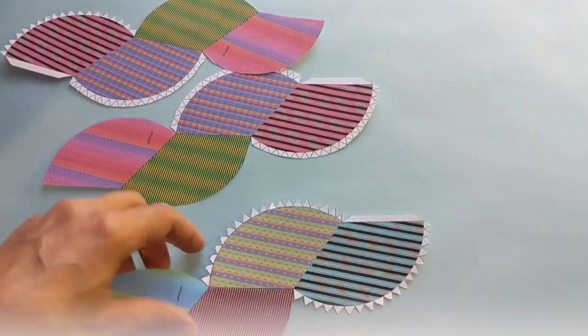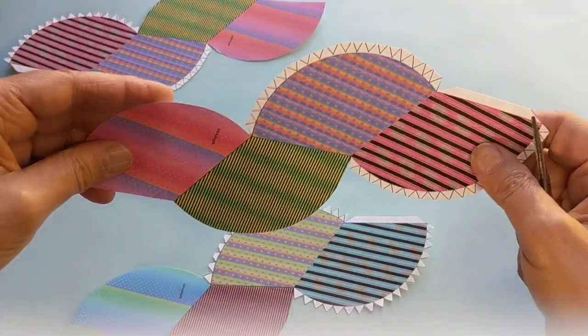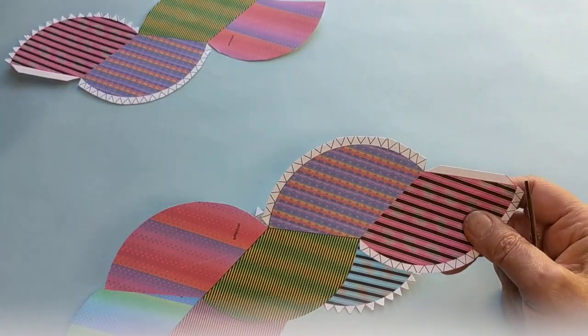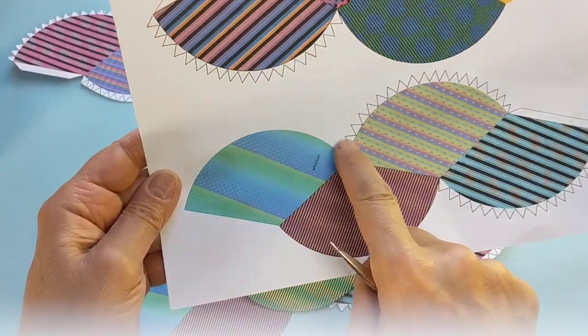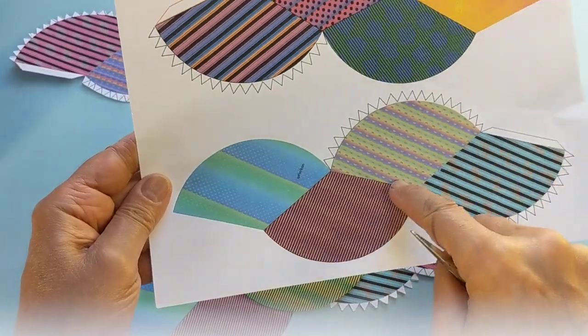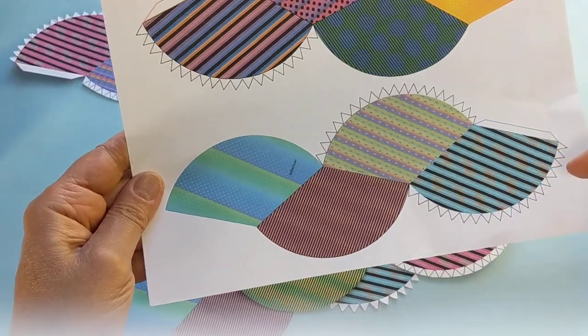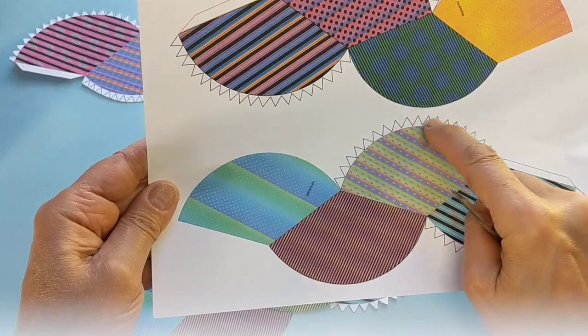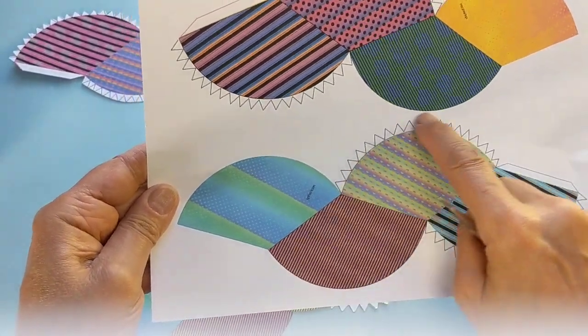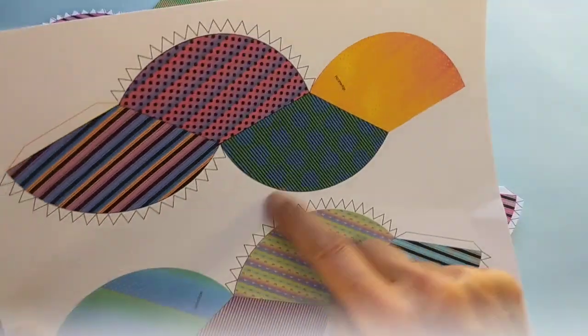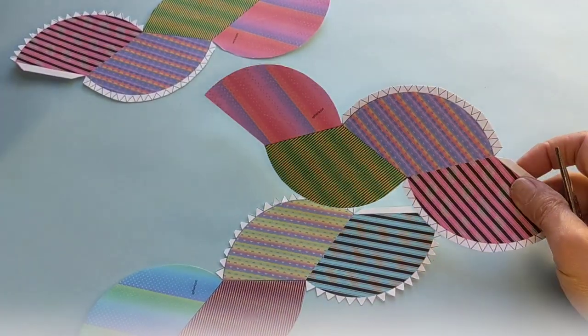So first thing you want to do is cut it out. I'd say cut it out kind of roughly, meaning go over the curves precisely, but then just make curve around the triangles, these little teeth. Don't worry about cutting off the tips. The tips aren't so important.